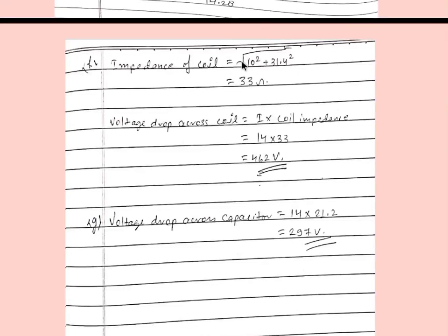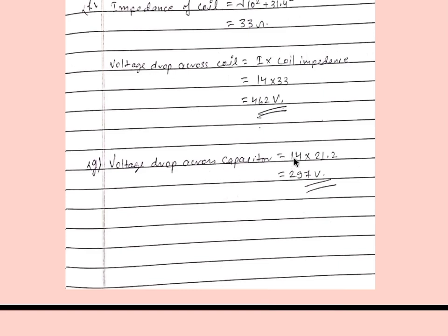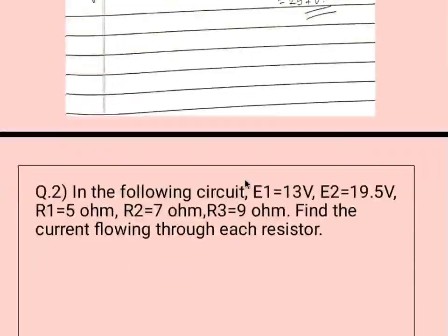Now the impedance of the coil is equal to the square root of R squared plus XL squared, which gives 33 ohm. The voltage drop across the coil is I multiplied by the coil impedance — 14 ampere times 33 ohm — giving 462 volt. For voltage drop across the capacitor: current is 14 ampere and XC is 21.2, so the answer is 297 volt.